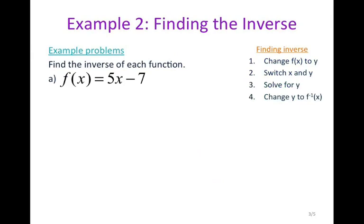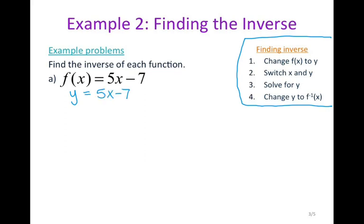My second example is actually finding the inverse. In order to find the inverse of a function, you're going to follow these four steps. Your first step is to change f of x to y, so I'm going to rewrite this as y equals 5x minus 7. Your second step is to switch the x and the y, so instead of y equals, I'm now going to have x equals 5y minus 7.